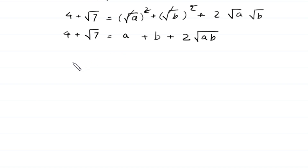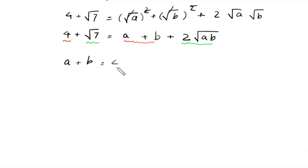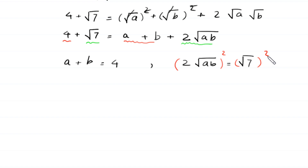From this equation we make two equations: a plus b equals 4, and 2 times square root of ab equals square root of 7. From the second equation, we take the square of both sides, giving us 4ab equals 7.